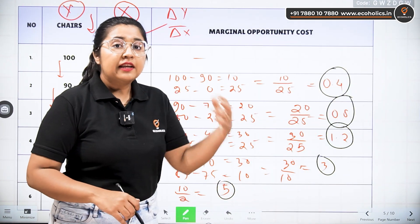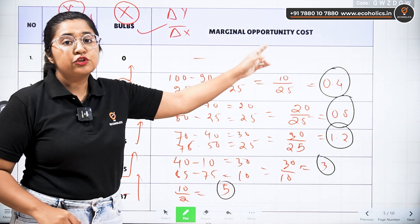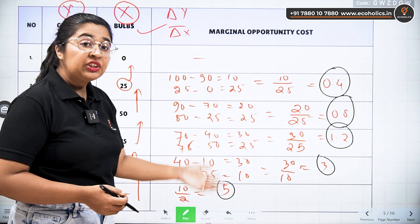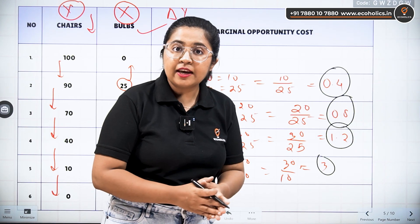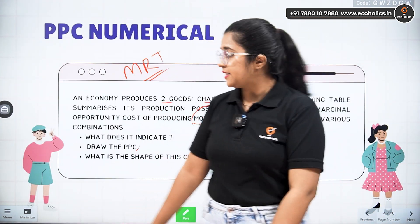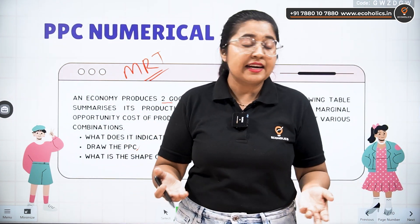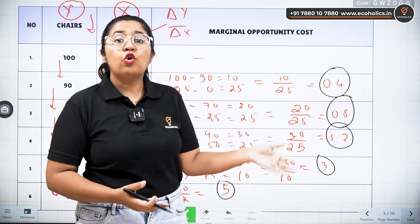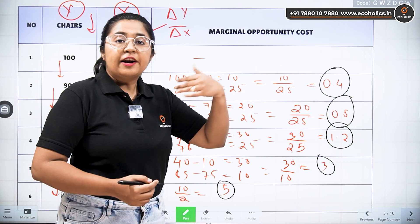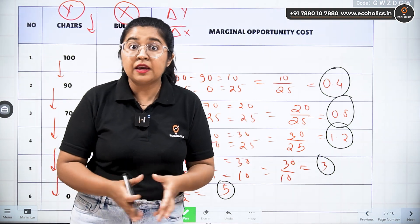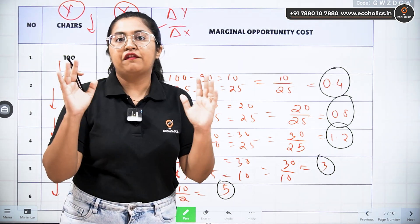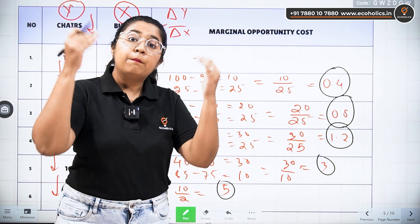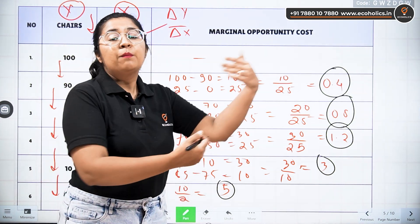We see that the marginal rate of transformation, or marginal opportunity cost, is gradually increasing — 0.4, 0.8, 1.2, 3, and 5. This increasing trend indicates that as additional units of bulbs need to be produced, more and more chair production needs to be sacrificed. Since we have the same amount of resources that must be utilized efficiently, more and more sacrifice of one commodity is required to gain more of the other.